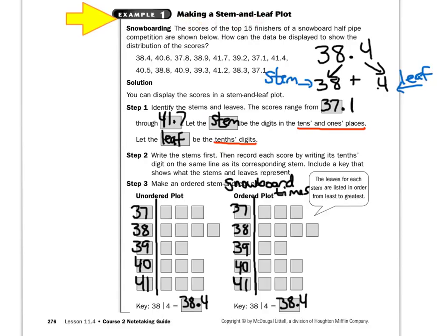Making a stem and leaf plot. The scores of the top 15 finishers of a snowboard halfpipe competition are shown below. How can the data be displayed to show the distribution of scores? You can display the scores in a stem and leaf plot. Take the first number they give you — 38.4 — and break it apart. The smallest place value, in this case the tenths place, is going to be the leaf. So the 4 represents the leaf. Everything else represents a stem: 38 is the stem, 0.4 is the leaf.